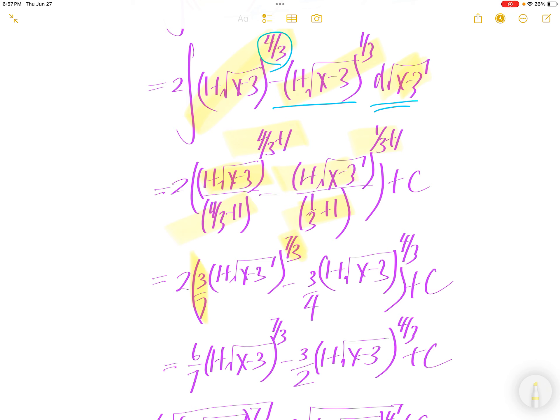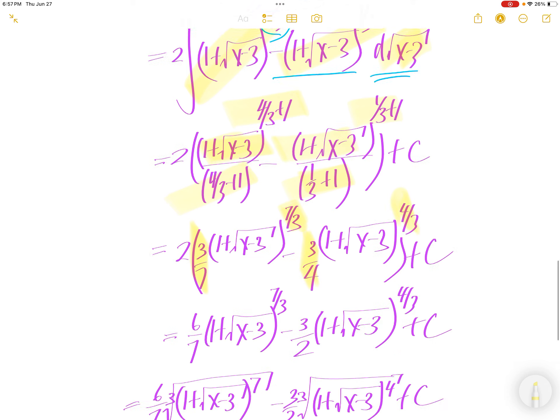1 third plus 1 is 1 third plus 3 over 3, 3 plus 1 is 4 over 3 upstairs, 4 over 3 downstairs. Flip it up, you get 3 over 4.